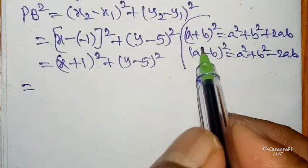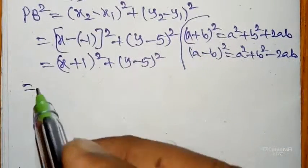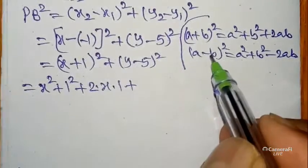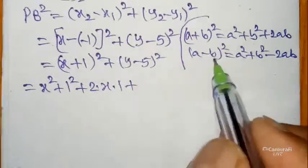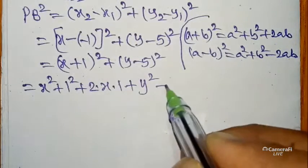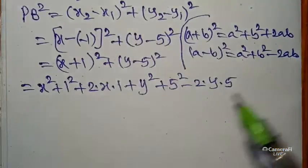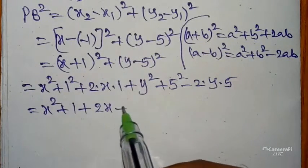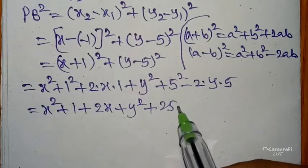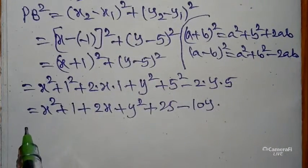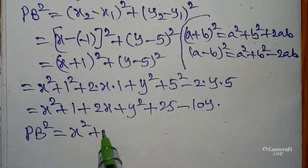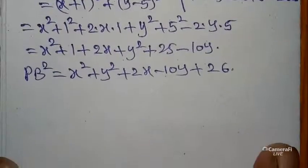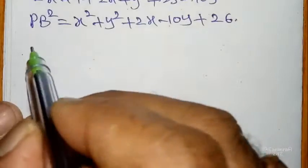Expanding: (x + 1)² = x² + 1 + 2x, and (y − 5)² = y² + 25 − 10y. So PB² = x² + y² + 2x − 10y + 26.